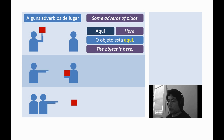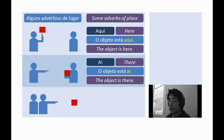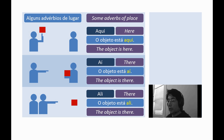Aqui — it means 'here,' close to the one who speaks. Aí — it means 'there,' far from the speaker and close to the listener. Ali — it means 'there,' far from both speaker and listener.